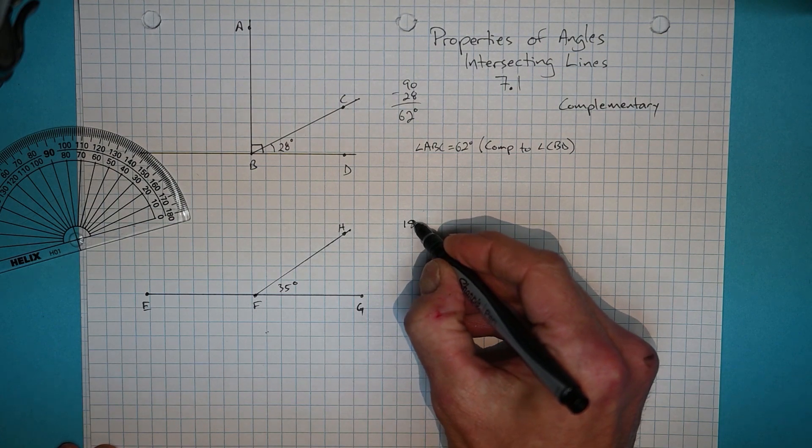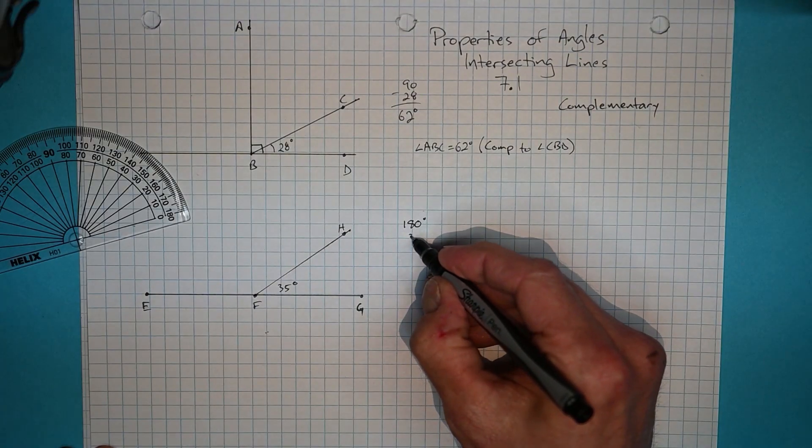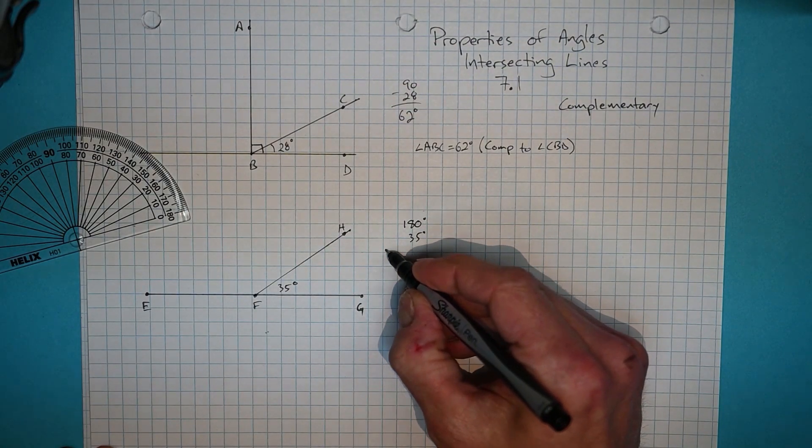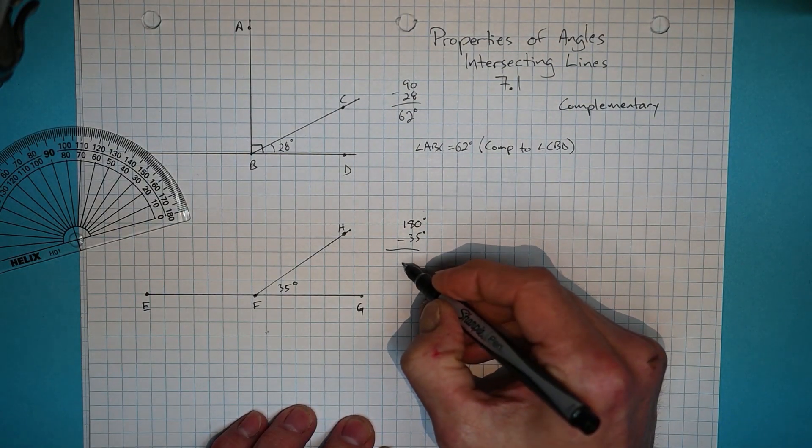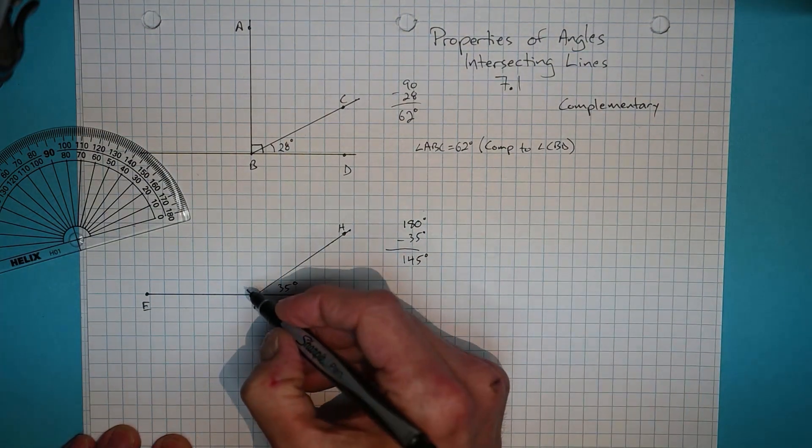So this time, instead of subtracting from 90, we're subtracting from the straight line, the 180. And so that leaves us with 145 degrees for the other side over here.